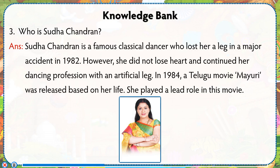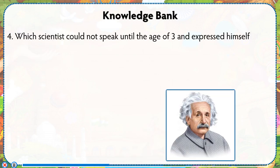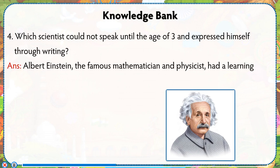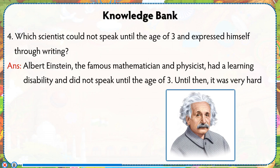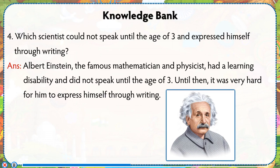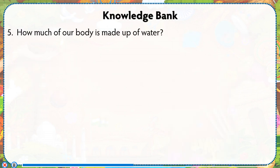She played a lead role in this movie. Which scientist could not speak until the age of three and expressed himself through writing? Albert Einstein, the famous mathematician and physicist, had a learning disability and did not speak until the age of three. Until then, it was very hard for him to express himself through writing.